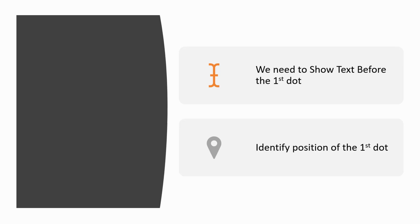In our first practice exercise, we have to fetch the data before the first dot. So in our first row, we have to fetch ABC. In the second row, we have to fetch Vikram. And in the third row, we have to fetch 1234. Now, in order to do that, the first step we need to do is to identify the position of the first dot.